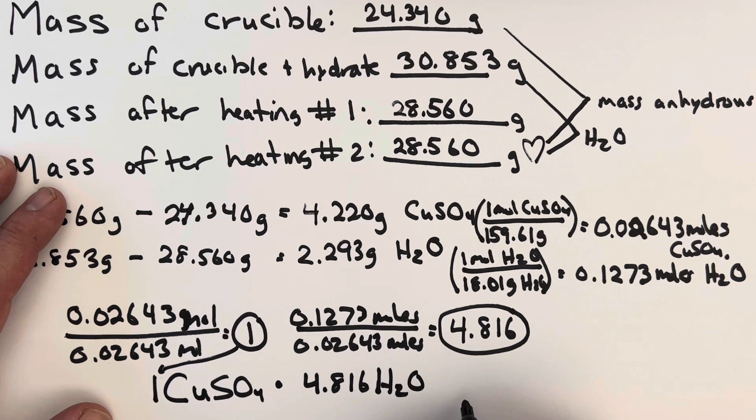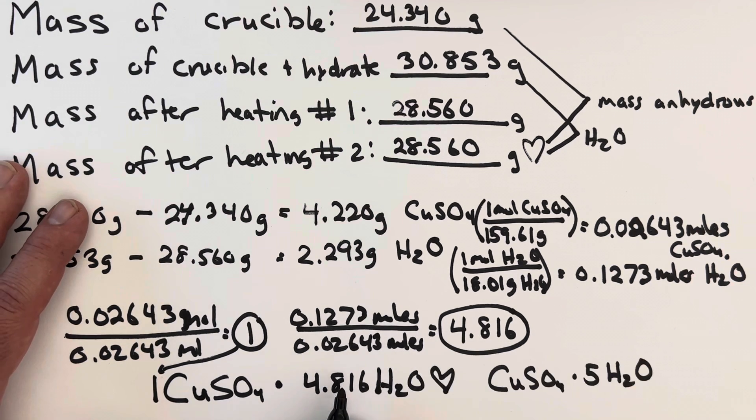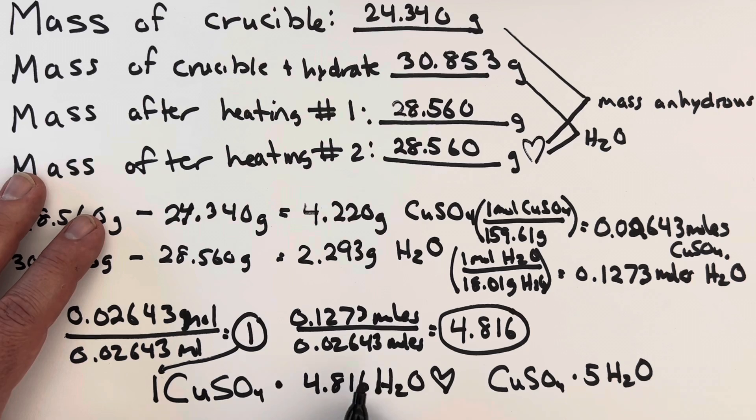And this would be the formula that I got. This number here is a little bit low, probably due to the fact that I didn't get all the water out, even though my masses agreed. Maybe there were some little water molecules sort of hanging on in there that I didn't get out. So there you have it: how to calculate the number of waters in a hydrate. Thanks for watching, and have a great day!